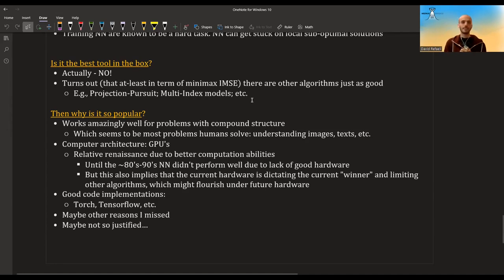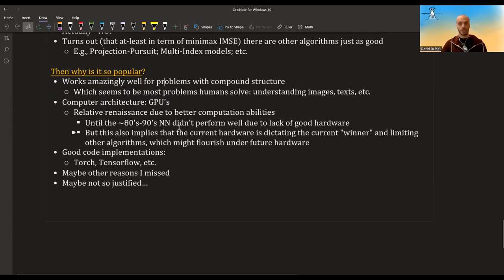It turns out that at least in one metric that is called the minimax IMSE - it doesn't matter what it is right now, it's just a metric to help us decide which algorithm is better - other algorithms are doing just as well. For example, there's something called projection pursuit. There's another set of models called the multi-index models, etc. So a good question is, why is neural networks so popular? Why everyone heard of neural networks, but probably no one heard of projection pursuit? I'm not sure.